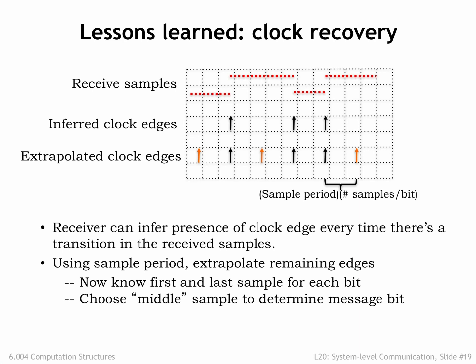The receiver can tell exactly where the packet starts, even if it missed a few training bits while the clocks were being properly synchronized. Once the receiver knows the timing of the clock edges, it can then sample the incoming waveform towards the end of each clock period to determine the transmitted bit.